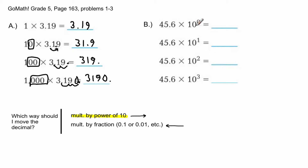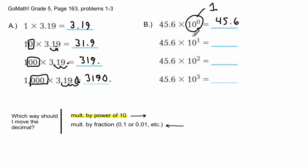For 45.6 × 10⁰, the exponent is zero, so I move the decimal zero spaces — it stays between the 5 and 6, giving 45.6. Side note: anything to the zero power equals one, so train your brain to remember that. For 45.6 × 10¹, the exponent is one, so I move the decimal one space to the right, giving 456.